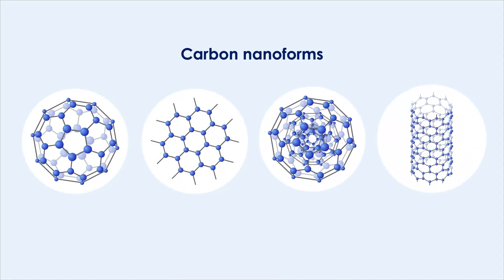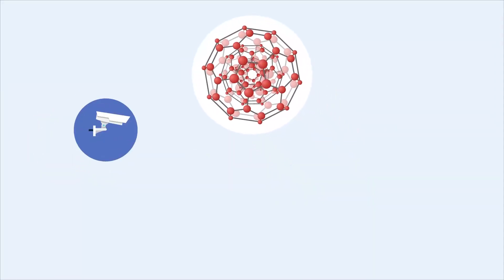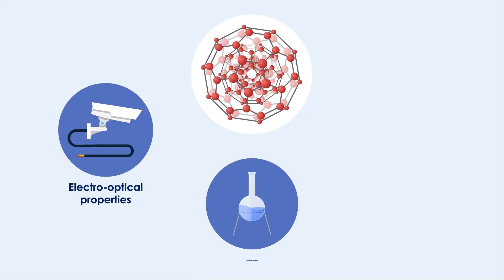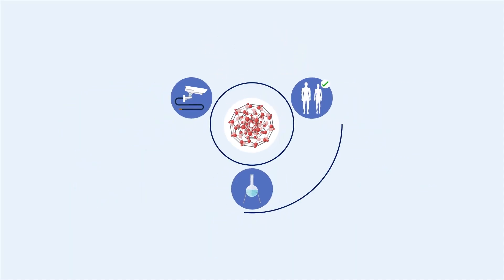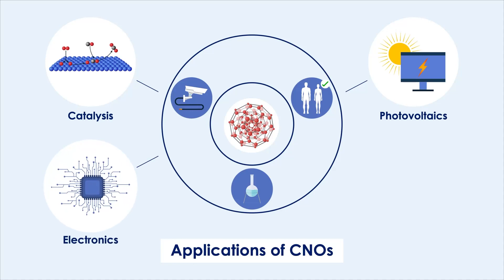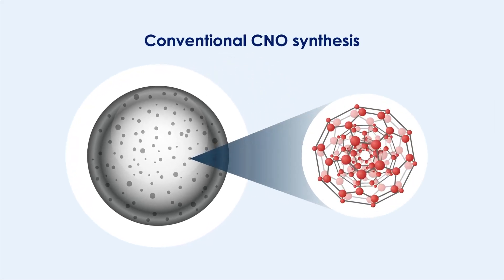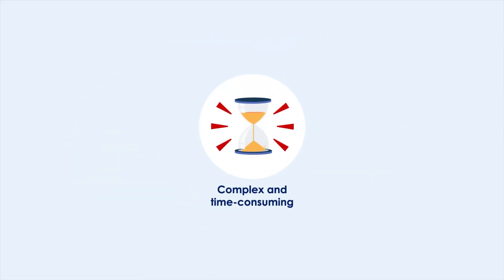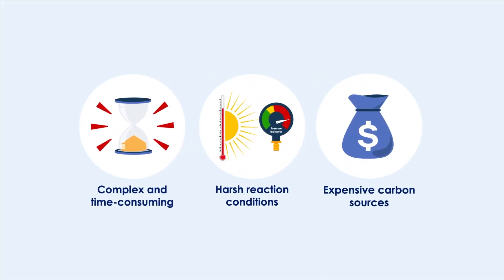A unique nanoform of carbon, the carbon nano-onion (CNO), has recently gained attention owing to its promising electro-optical properties, chemical inertness, and biocompatibility. These make CNOs ideal for use in catalysis, photovoltaics, electronics, and biodiagnostic applications. Despite their high demand, however, conventional methods of CNO synthesis are complex, time-consuming, and demand harsh reaction conditions, expensive carbon sources, and hazardous reagents.